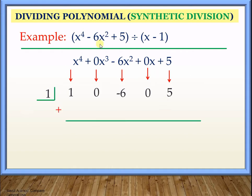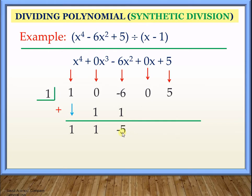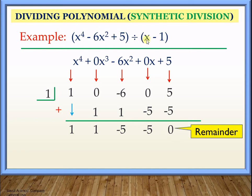Now we perform the synthetic division. Drop the 1 here. Since we have the 1 here, we multiply: 1 times 1 will be placed here, it's 1. Perform the operation: 0 plus 1 gives us 1. Continue: 1 times 1, place it here, we have 1. Negative 6 plus 1 gives us negative 5. 1 times negative 5, place it here, we have negative 5. 0 plus negative 5 gives us negative 5. 1 times negative 5 gives us negative 5. So 5 plus negative 5 is 0. Our remainder is 0; therefore x minus 1 is a factor of x to the 4th minus 6x squared plus 5.